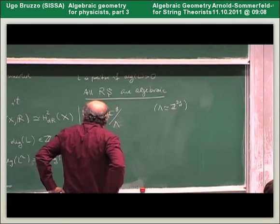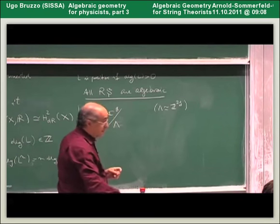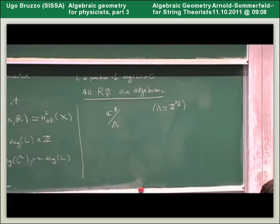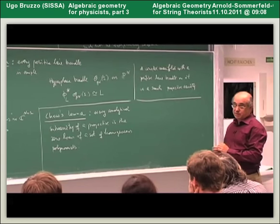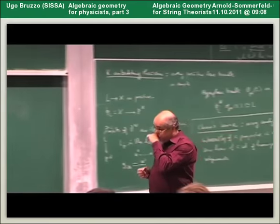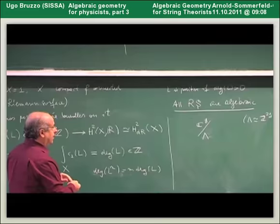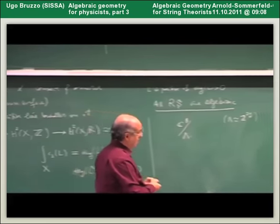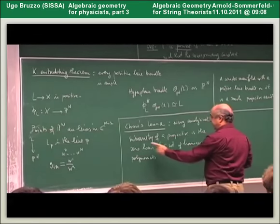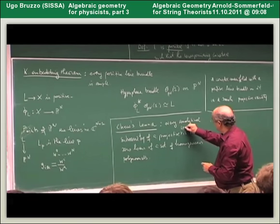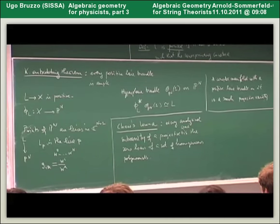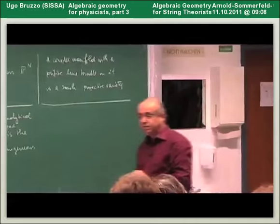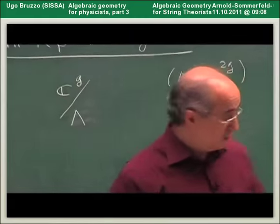We know about the possibility of embedding a complex manifold into a projective space. This possibility is provided by a line bundle which is positive — namely, it carries a metric whose corresponding Chern curvature is positive definite. When this is true, a power of the line bundle will be very ample, which means the corresponding morphism into projective space is an embedding. It identifies the complex manifold with its image in projective space. This image is an analytical sub-variety of projective space, and Chow's Lemma tells us that any such sub-variety is actually algebraic — given as the zero locus of a set of homogeneous polynomials.